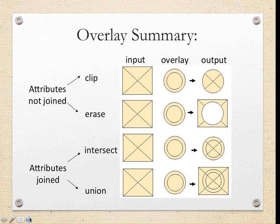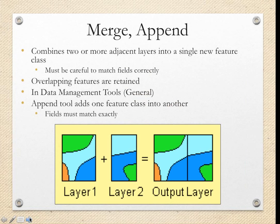Similar to Intersect is the Union tool, but when you use Union, the extent of both feature classes still remains. Using the same example, a union would display all land with loamy soil and all organic farming land, with land that has loamy soil and is also dedicated to organic farming highlighted.